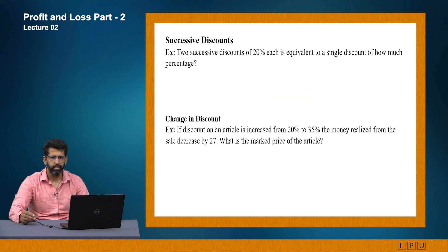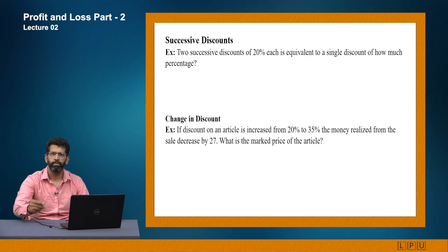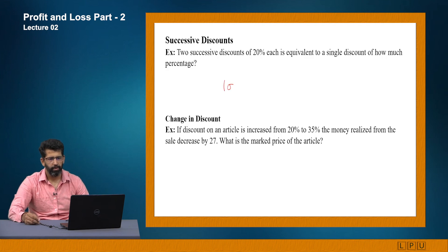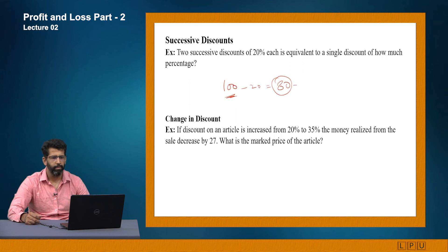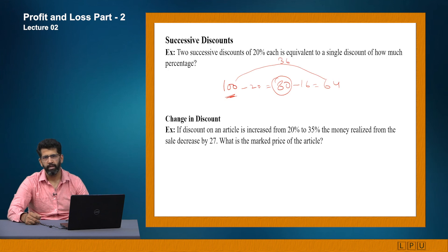The next subtopic is successive discount. When you see a discount like '20% plus 20%', that is not equivalent to a 40% discount — 20 + 20 is different from 40%. For example, on a marked price of 100: first 20% discount gives 80, then a second 20% discount is calculated on 80, giving 16 off, so you pay 64. Against 100 rupees, you paid 64, meaning a discount of 36 rupees, which is 36%.